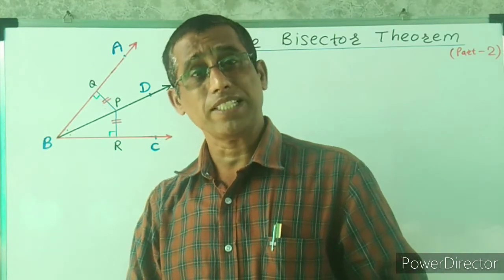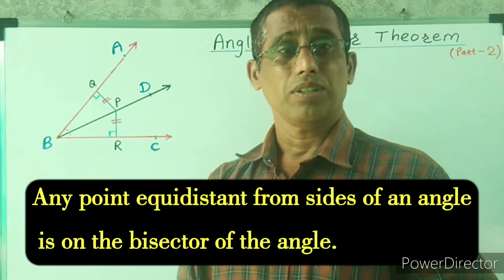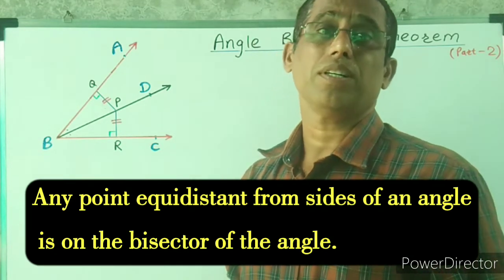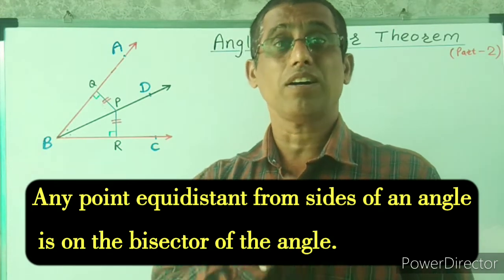What is angle bisector theorem part 2? Any point equidistant from the sides of the angle is on the bisector of the angle.